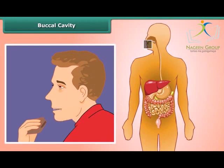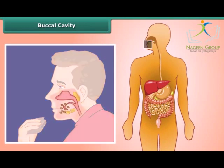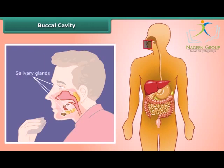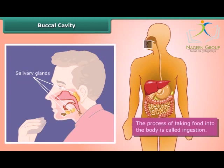Mechanical digestion breaks food into smaller pieces, and saliva in our mouth, produced by salivary glands, causes the breakdown of starches into sugars. This process of taking food into the body is called ingestion.